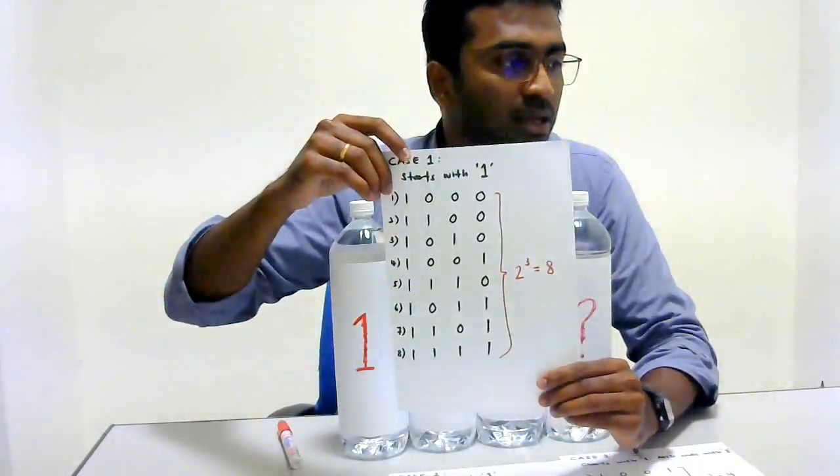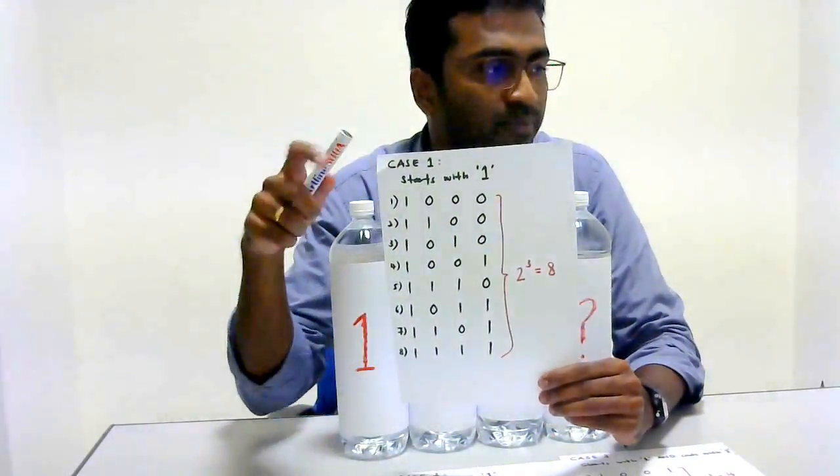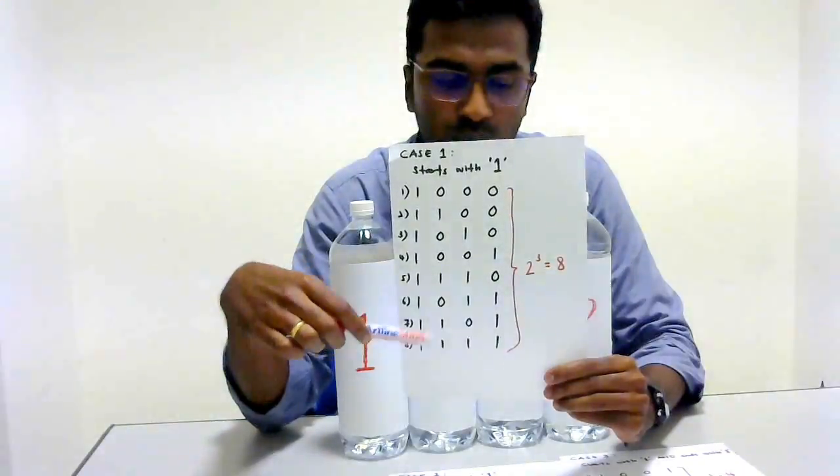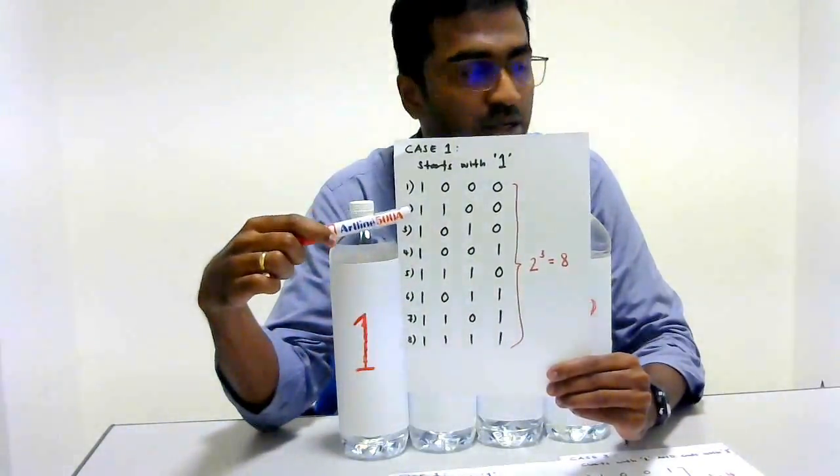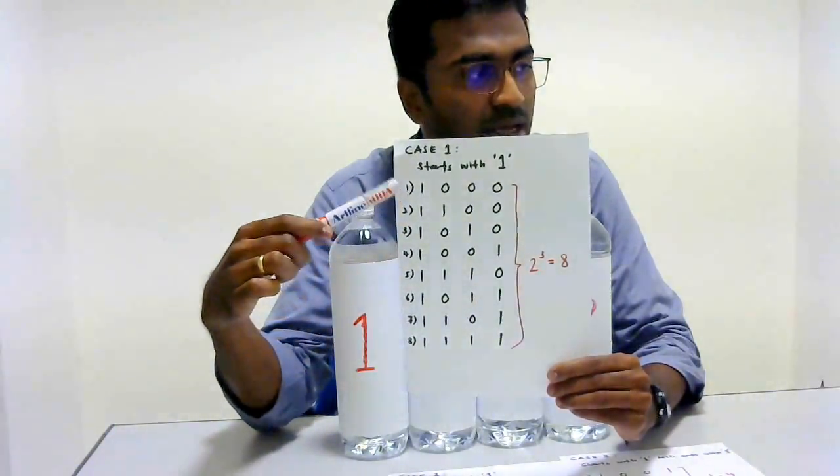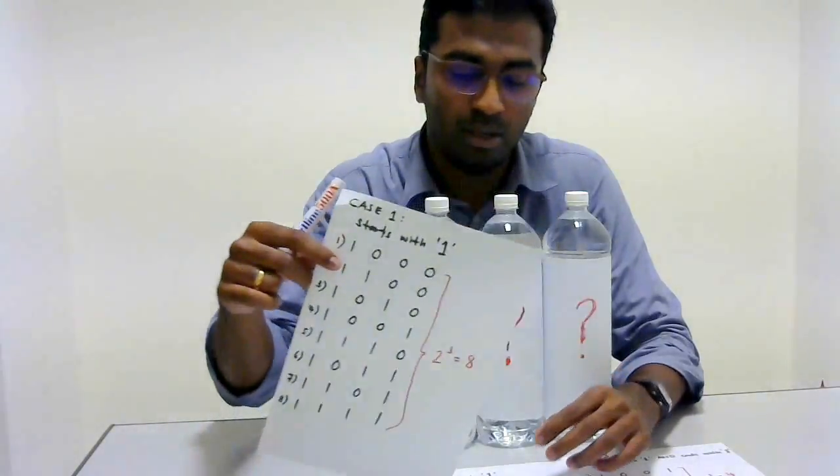So if you see this, we are going to have 2^3 combinations of strings that start with 1.